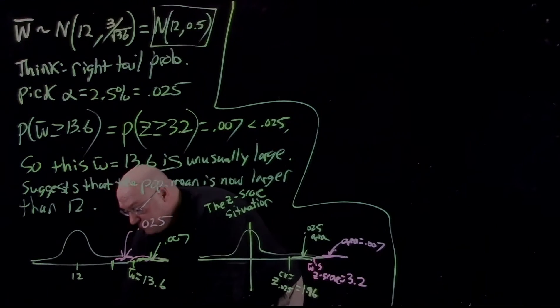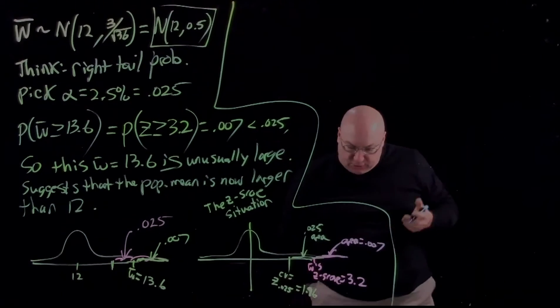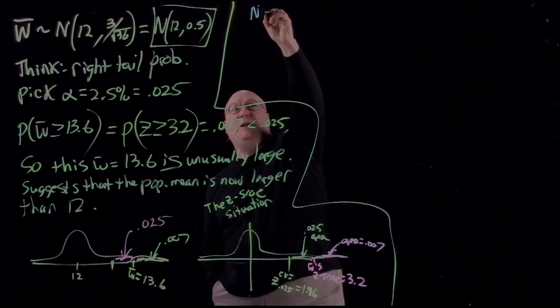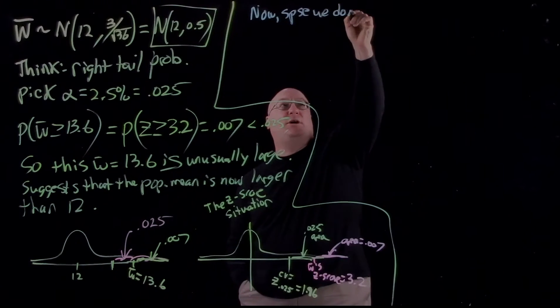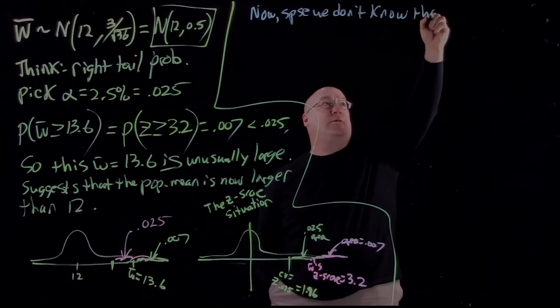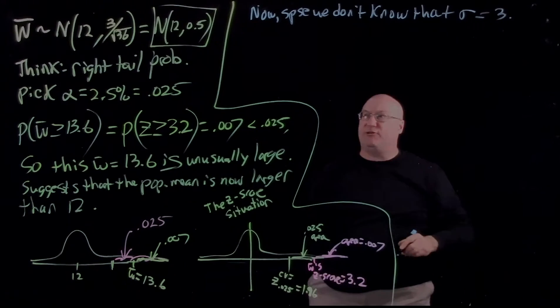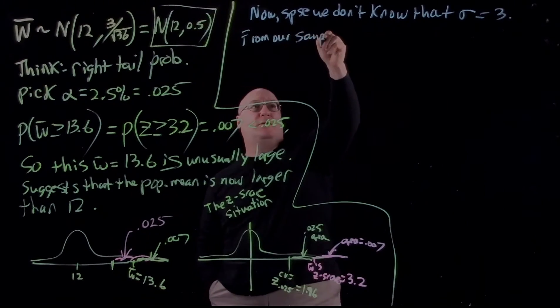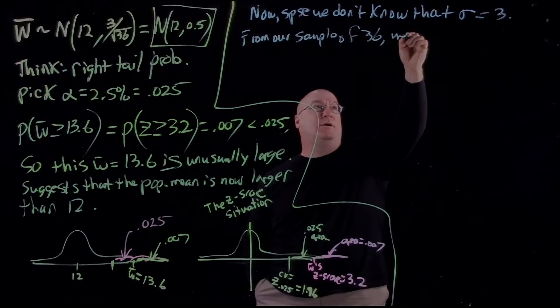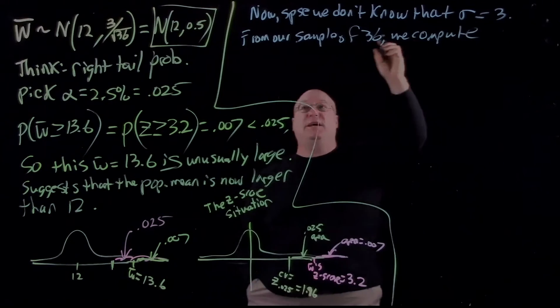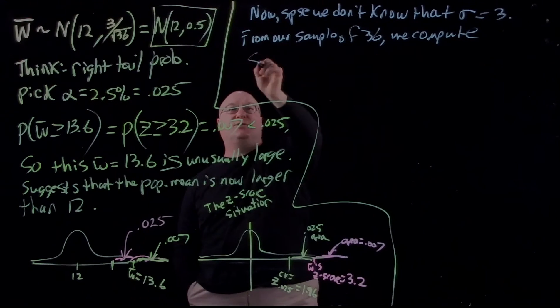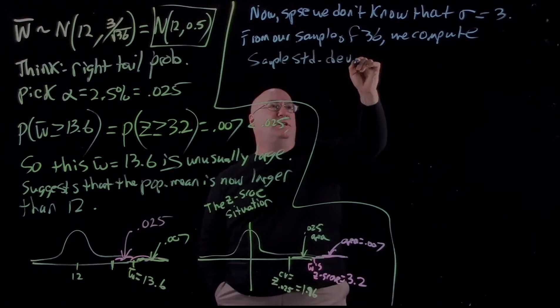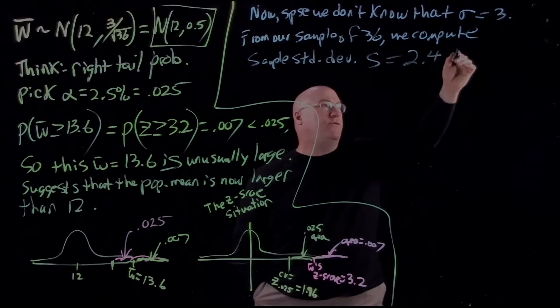What do we do then? Well, suppose we don't have that. Let's assume that we take our sample. Suppose we don't know that sigma equals 3. It may have changed, or maybe we didn't even know it originally. So from our sample of 36, we now have to compute not just W bar, but we also have to compute the sample standard deviation S. And let's say it comes out to be 2.4 pounds.